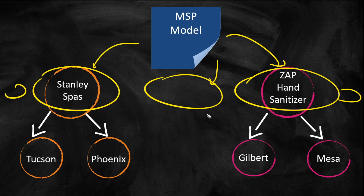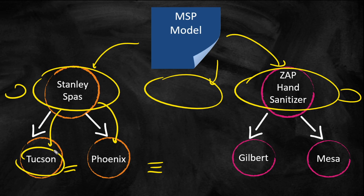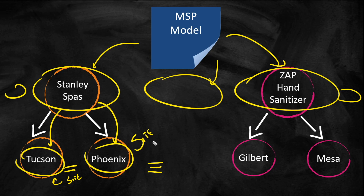Those can be your top-level regions. Underneath that, you can break it into sub-regions — let's say Stanley Spas has three offices in Phoenix and two in Tucson. You could create a sub-region for Tucson and Phoenix and put your sites underneath there. Or if Stanley Spas has one office per location, you could just make that the site — you don't have to make it a sub-region. Same with Zapp Hand Sanitizer: locations could be sub-regions, divided further into sub-sub-regions, or they could be individual sites.